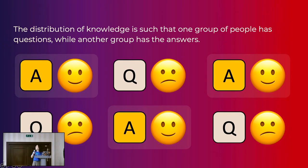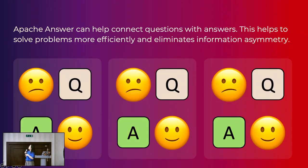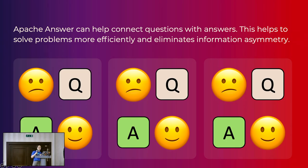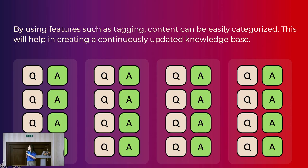The distribution of knowledge is such that one group of people has the questions and another group has the answers. Apache Answer can help connect questions with answers. Questions that were once scattered across various platforms can now be centralized on just one platform, where information can be easily searched. This helps to solve problems more efficiently and eliminate information asymmetry. By using features such as tagging, content can be easily categorized, helping create a continuously updated knowledge base.